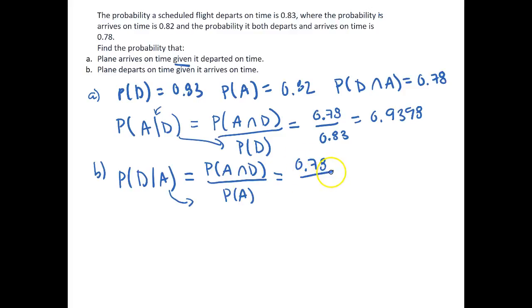We get then the probability of A and D, which is 0.78, all divided by the probability that event A has occurred, and this is equal to 0.9512.